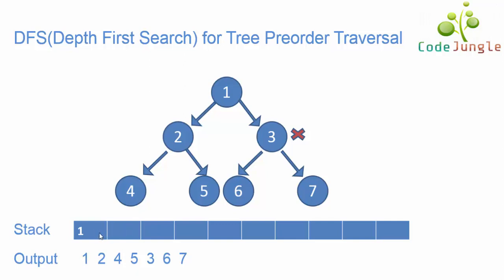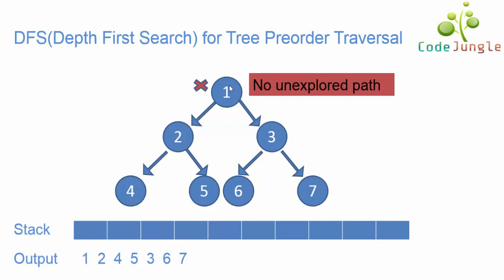Next the topmost element in the stack is 1. Again we will see if there are more child elements for 1 or not. As there are no more child elements for 1, we will not include anything in the output. However we will pop out 1 from the stack. With this the stack is empty and hence the algorithm stops. Also if we observe, there are no more unexplored paths in this tree. Hence the tree has been traversed using the DFS method for pre-order traversal.